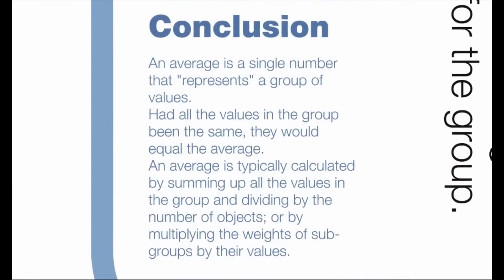Conclusion: An average is a single number that represents a group of values. Had all the values in the group been the same, they would equal the average. An average is typically calculated by summing up all the values in the group and dividing by the number of objects, or by multiplying the weights of subgroups by their values.